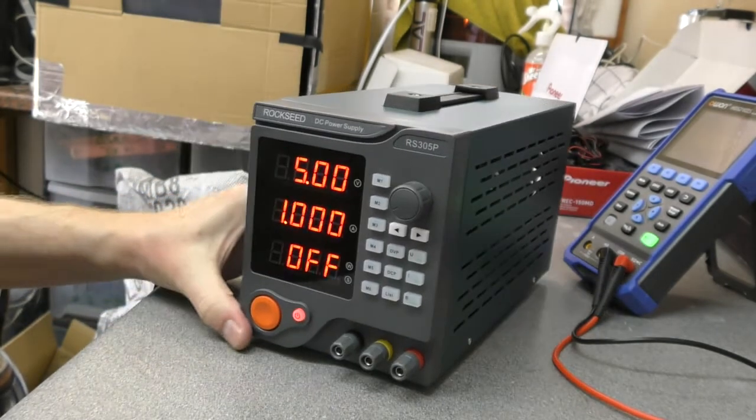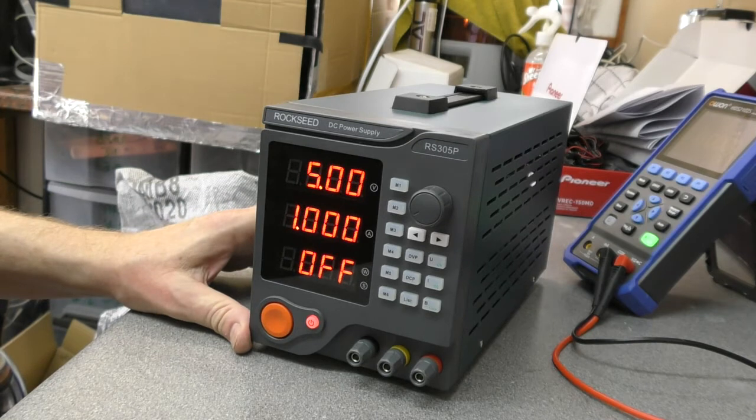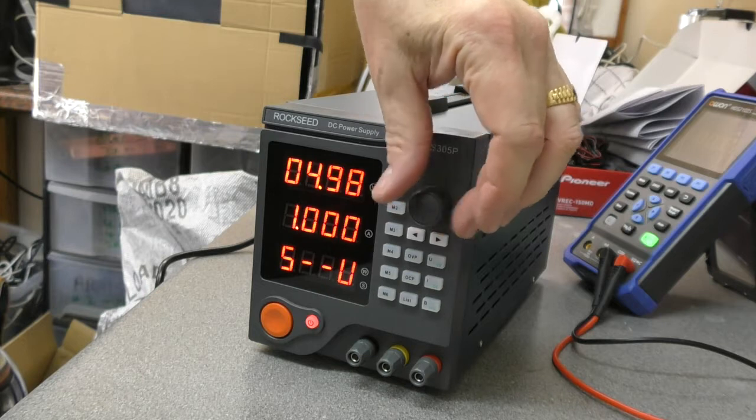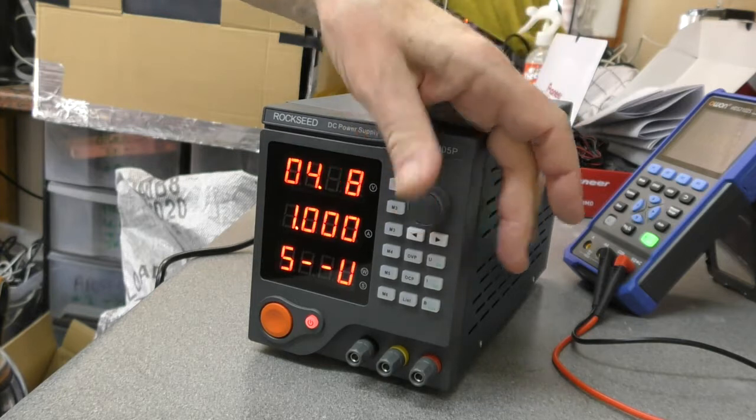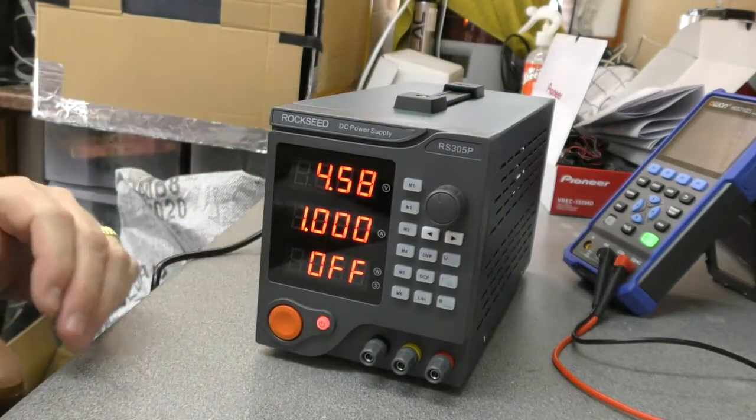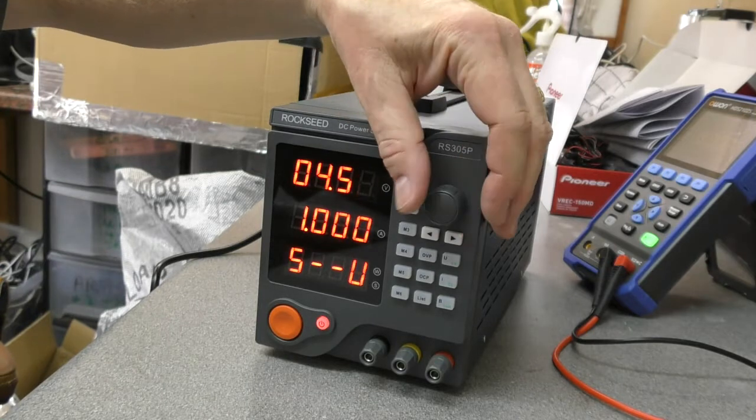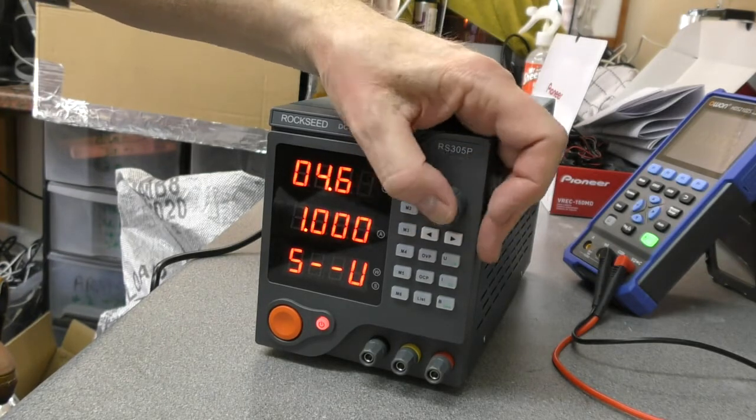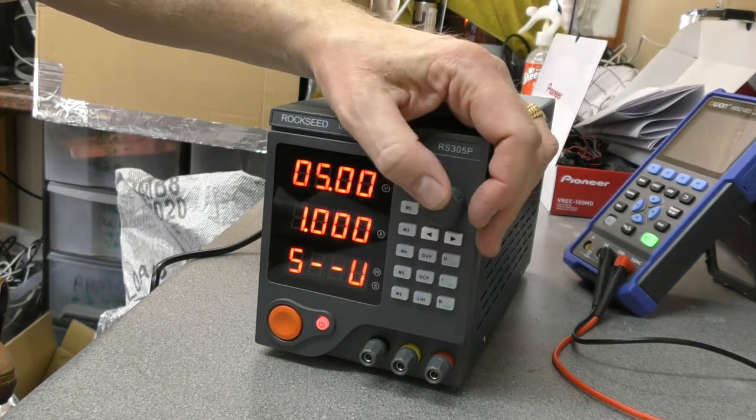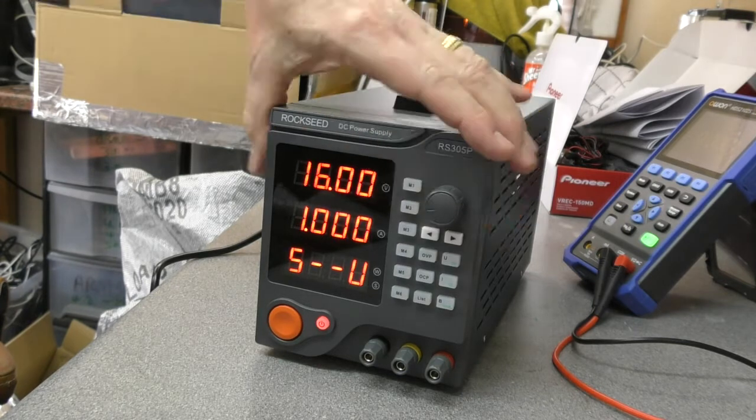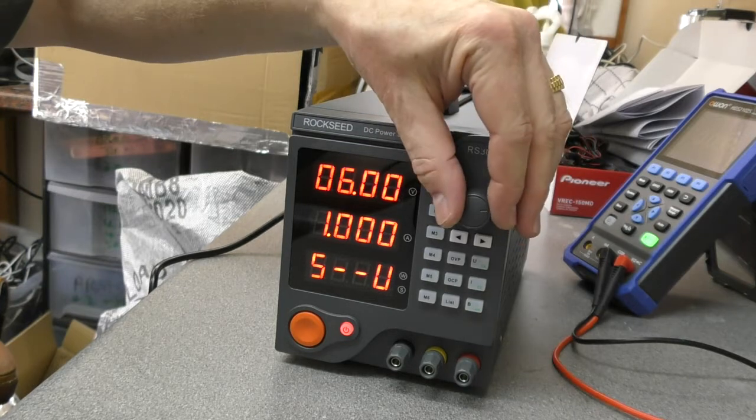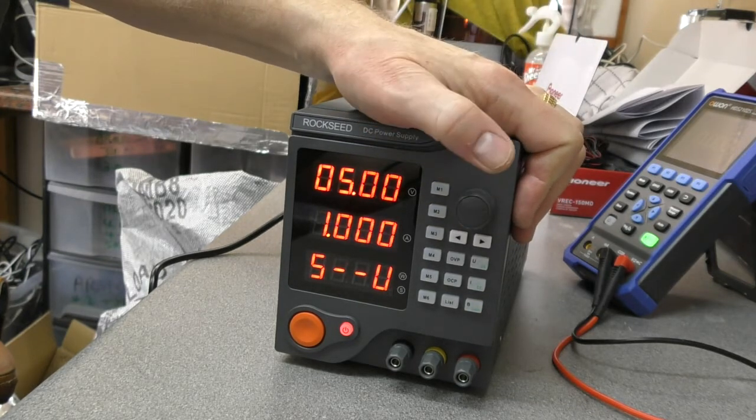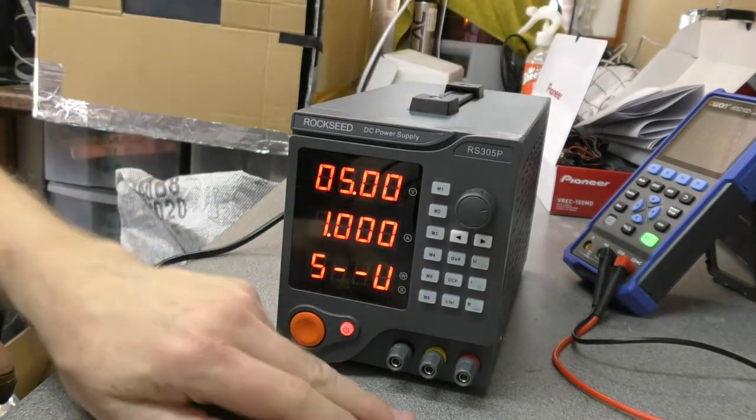So we have five volts, one amp, and off. Whatever that is. So let's see if we can turn this. Now let's see. That's how you can vary the digits. If you want to get it easily done, so you can go to each digit if you want exact figures. So you can go to 10, 12, 5, whatever you want. Just by going like that.